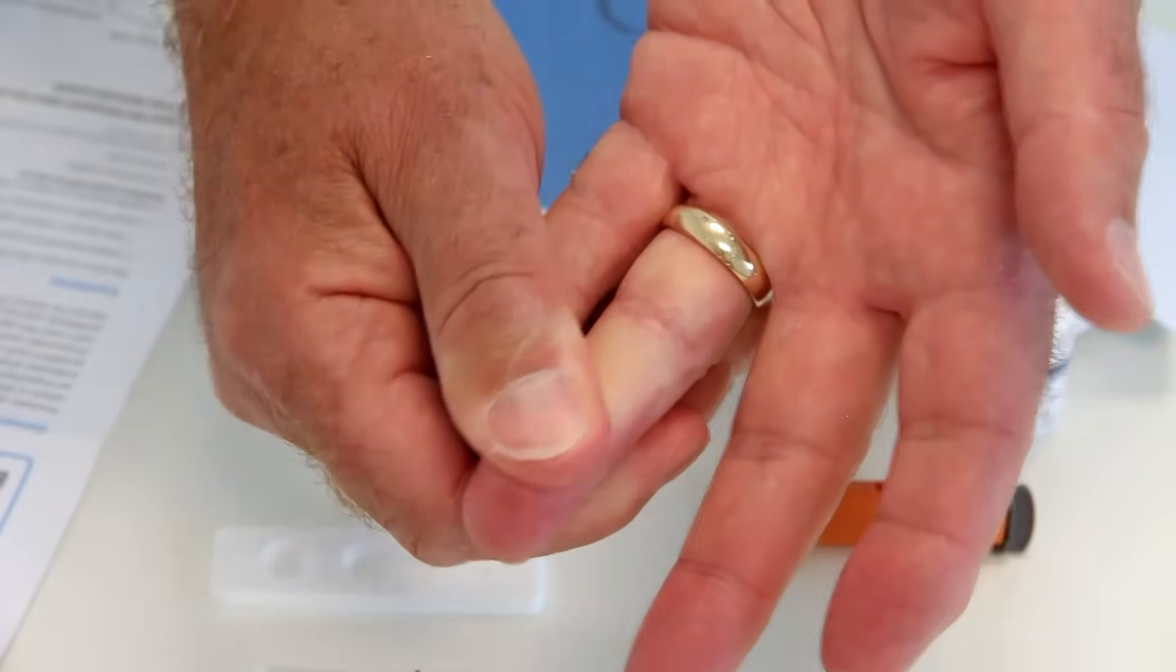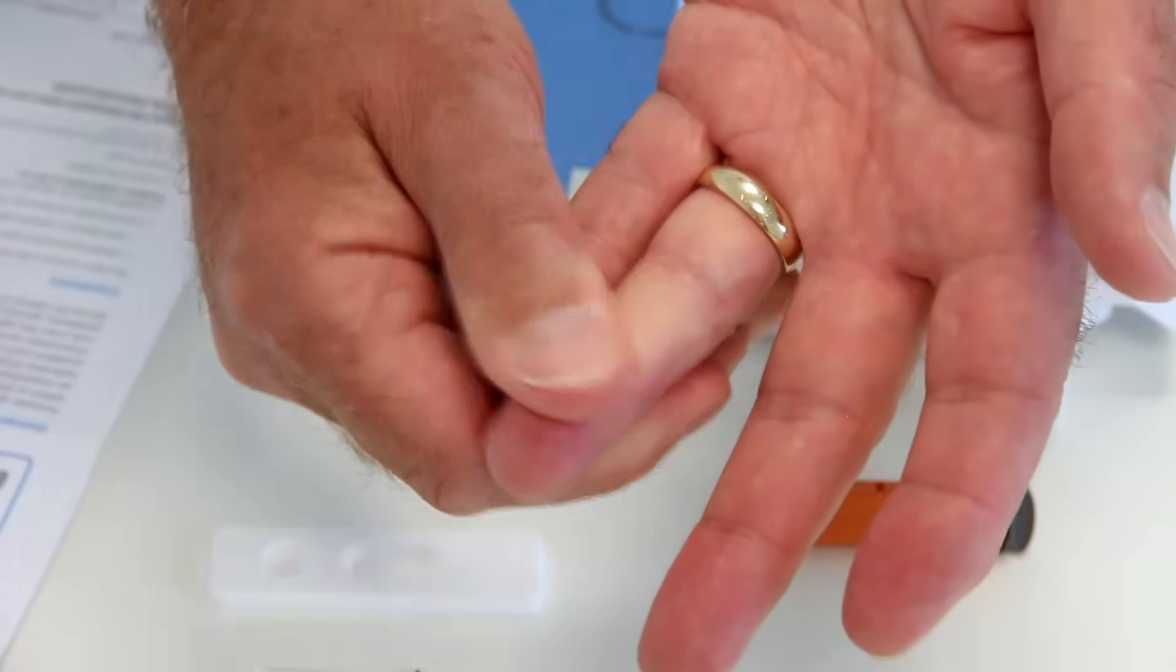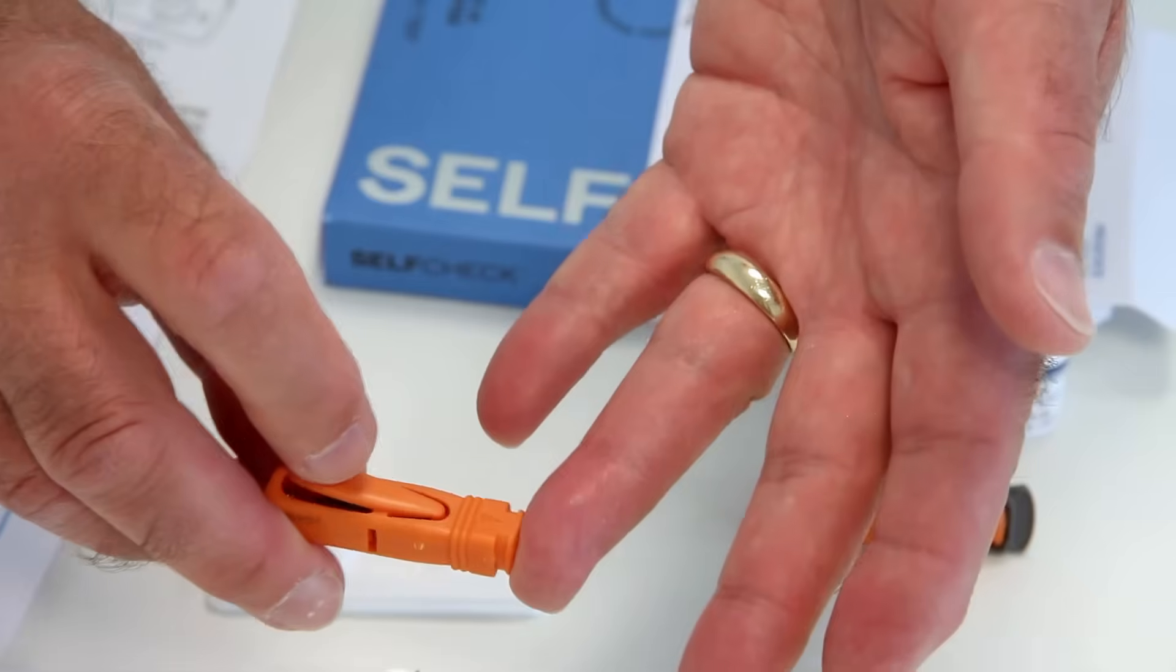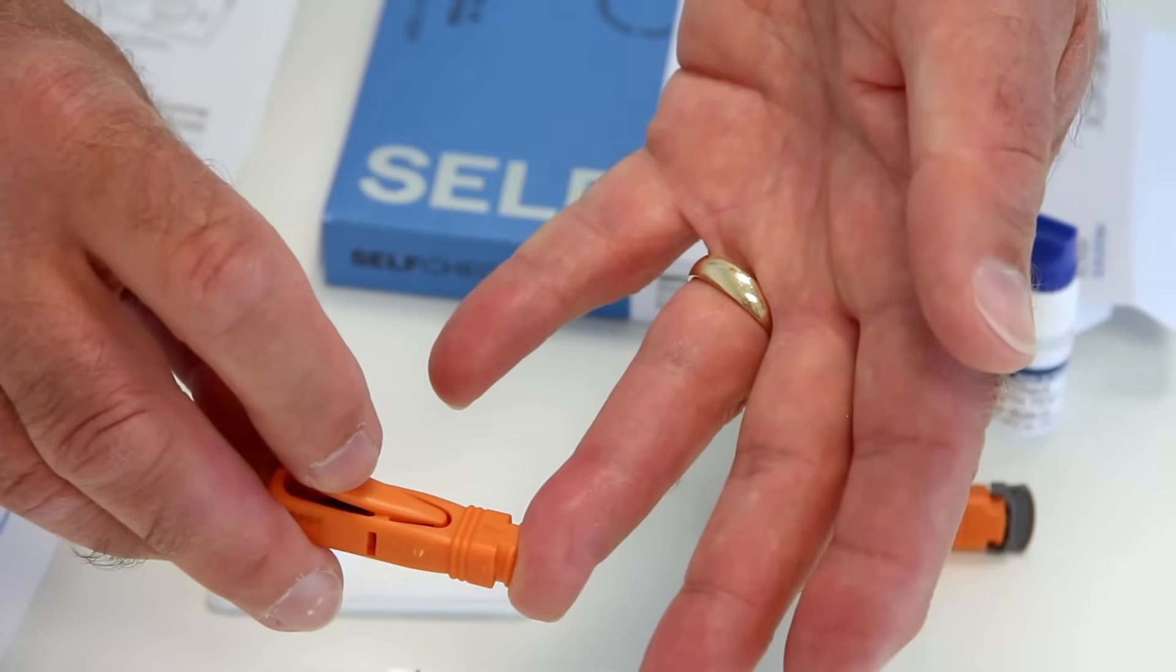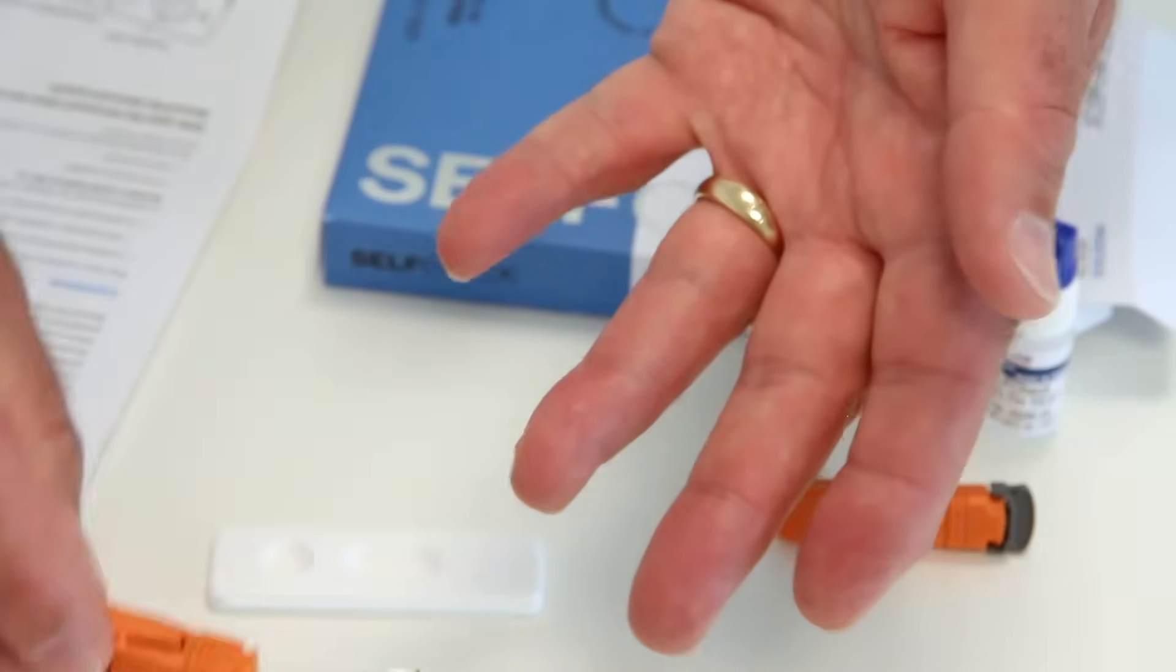Massage your finger again to increase the blood flow. Then press the lancet firmly against your fingertip, then press the trigger button to fire the lancet needle. You will hear a click.